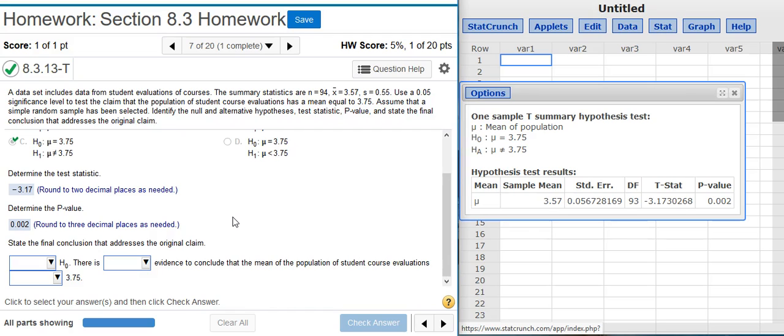And now the last part of our problem asks us to state the final conclusion that addresses the original claim. To do that, we can either use the test statistic or the p-value. It's easier to use the p-value, so that's the route I'm going to take. To use the p-value to state our final conclusion from the hypothesis test, we need to compare the p-value with the significance level for the hypothesis test. In the problem statement, we were instructed to use a 5% significance level. So I compare the p-value, which is 2 tenths of a percent, with 5%. Because 0.002 is less than 0.05, I'm inside the rejection region.